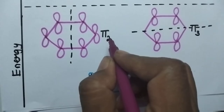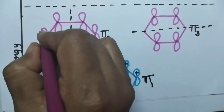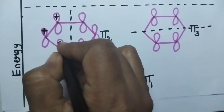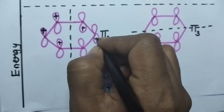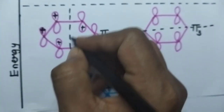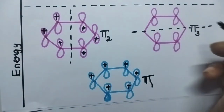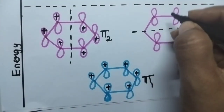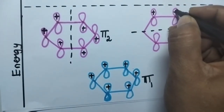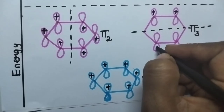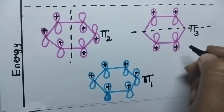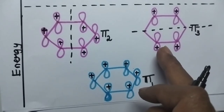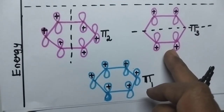Coming to the pi 2 molecular orbital, a vertical nodal plane is present. These three p orbitals are symmetrical to each other, and the opposite pair are also symmetrical, and hence a nodal plane is observed along the vertical plane. Coming to the pi 3 molecular orbital, a nodal plane is observed through the atoms, and hence the above atoms will have symmetry while the orbitals on the below atoms will have opposite symmetry. These are the pi 2 and pi 3 molecular orbitals of benzene.